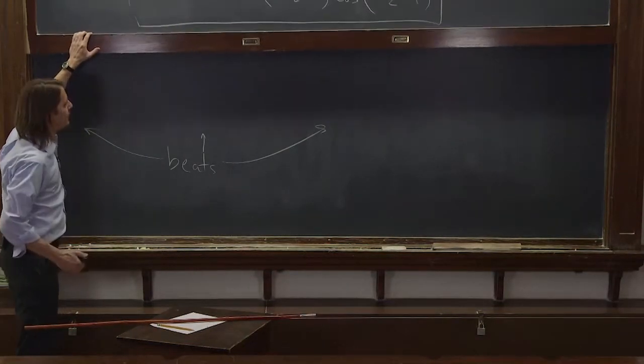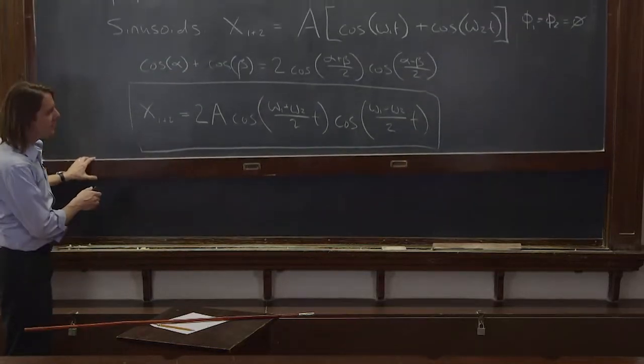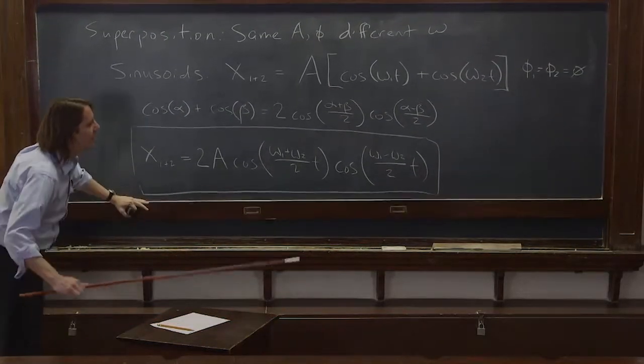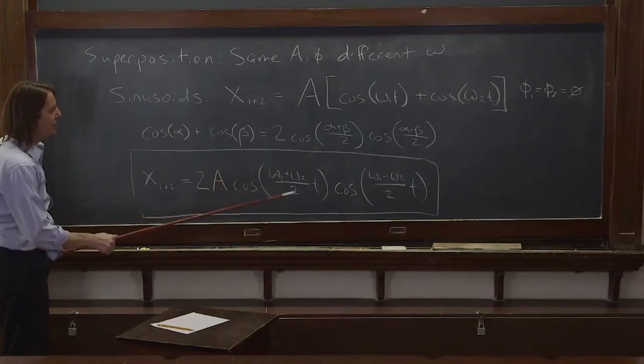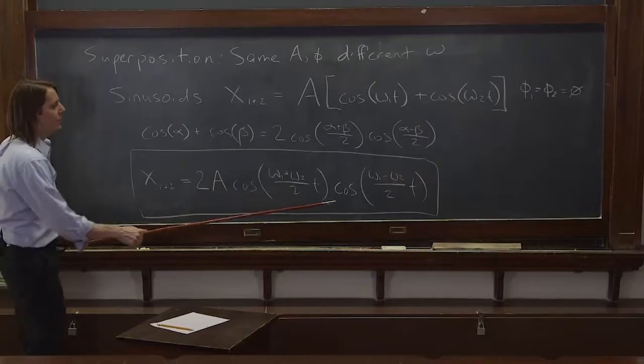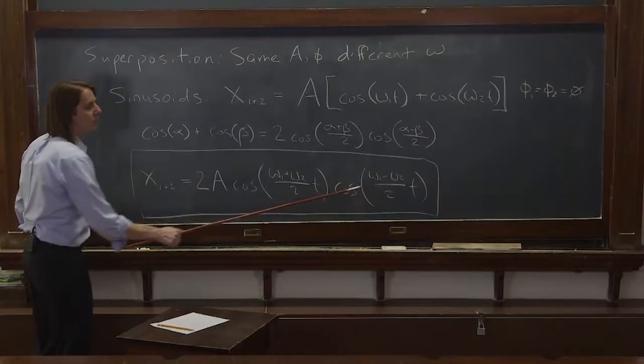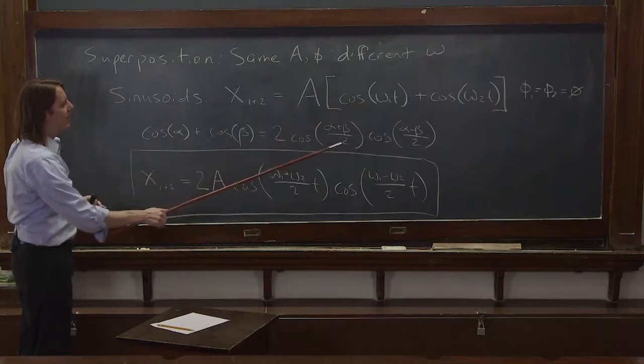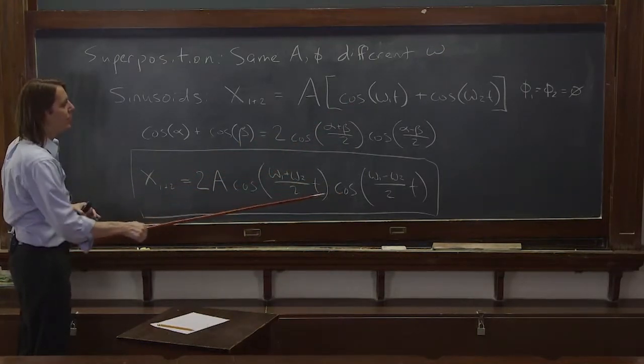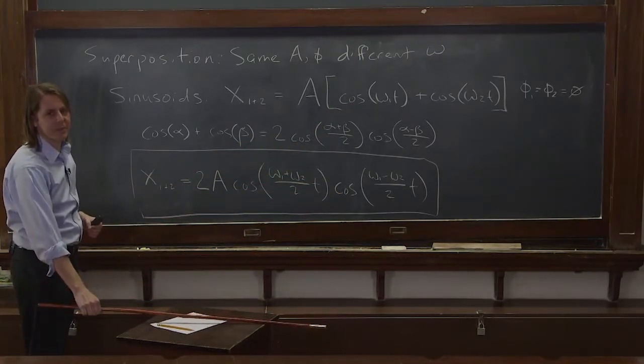And you can see that, if we go back now to our expression, that the frequency, the high frequency part, is the average of the two frequencies. Omega 1 plus omega 2 over 2. And the frequency of the slow envelope is the difference over 2. So you can see it. It actually makes perfect sense from here. And then this identity gives you something that really looks like it describes the beat phenomenon, the beat effect.